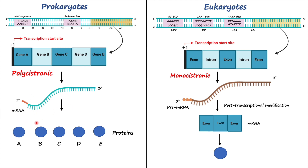Another important point is that mRNA in prokaryotes does not undergo post-transcriptional modification. Therefore, while mRNA is still being synthesized, the five-prime end can already be used for protein synthesis — meaning protein synthesis and mRNA synthesis occur at the same time. In eukaryotes, because the pre-mRNA must go through post-transcriptional modification, it cannot be used for protein synthesis until that modification is complete.